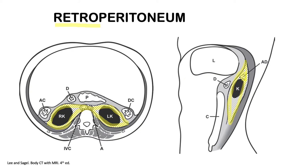The anterior margin of this perirenal space is called the renal fascia. We have a renal fascia in the anterior portion and a renal fascia in the posterior portion, and those two fascia merge to become the lateral conal fascia. The other name for the anterior renal fascia is the Gerota's fascia, while the posterior renal fascia is the Zuckerkandl's fascia.